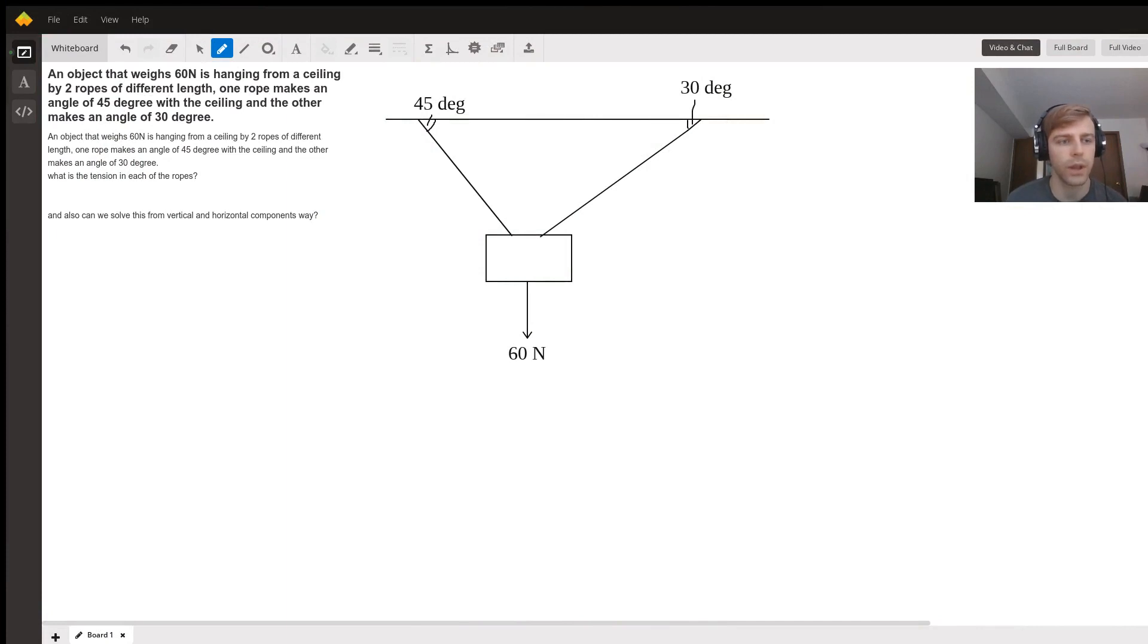Okay, so we have an example of a problem here where you have an object that is hanging from the ceiling with two different ropes. Those ropes are holding it up with tension. And I'm going to jump right to your last question here where you ask if we can use vertical and horizontal components. And that's exactly how we're going to do it.